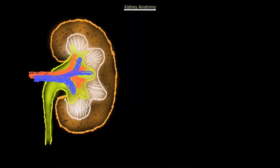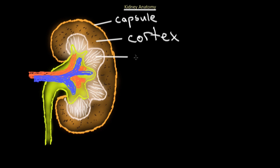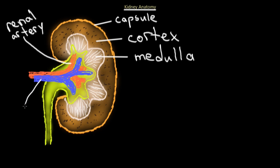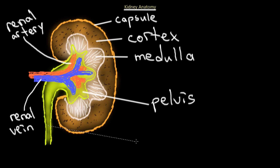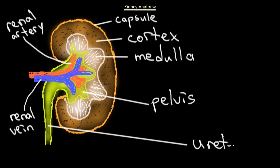Now let's discuss kidney anatomy. The outer covering of the kidney is called the capsule. The next layer is the cortex. Moving further inside, we have the medulla. We also have the renal artery and the renal vein. Moving further inward, we have the pelvis, which connects to the ureter. The ureter takes the urine extracted from the blood and carries it down to the bladder.